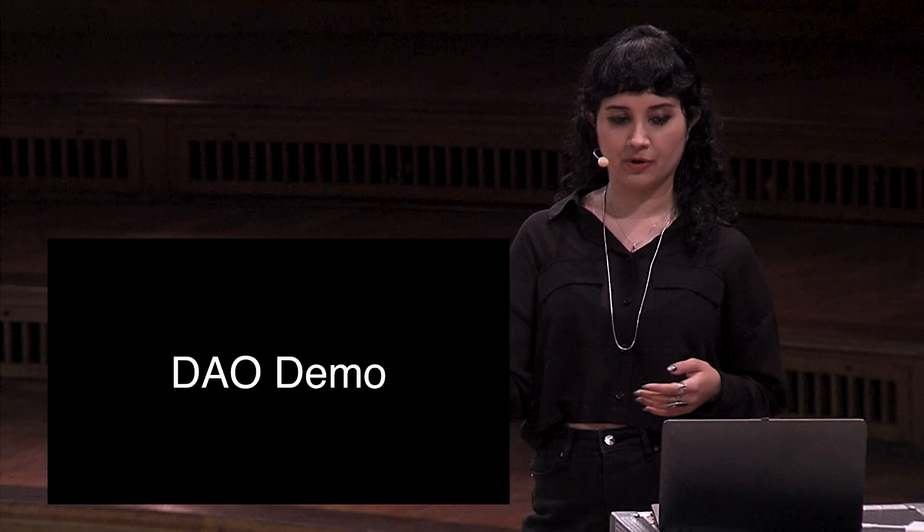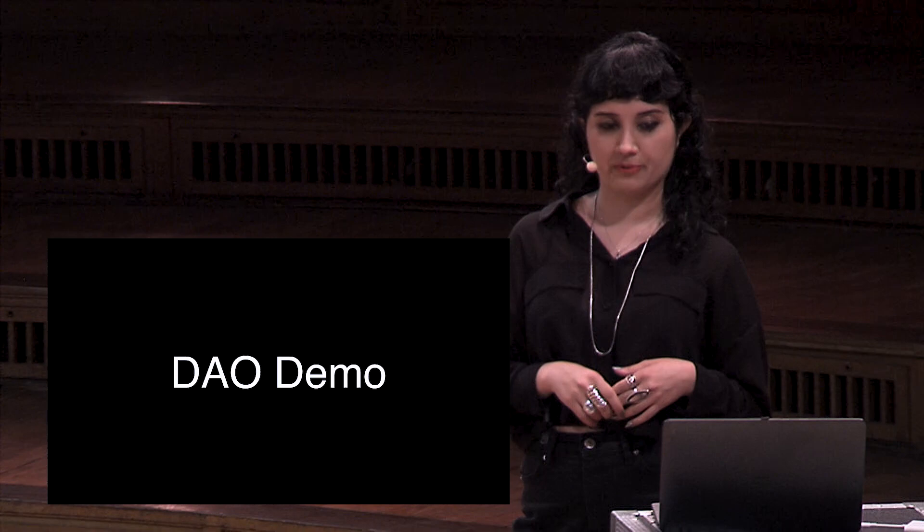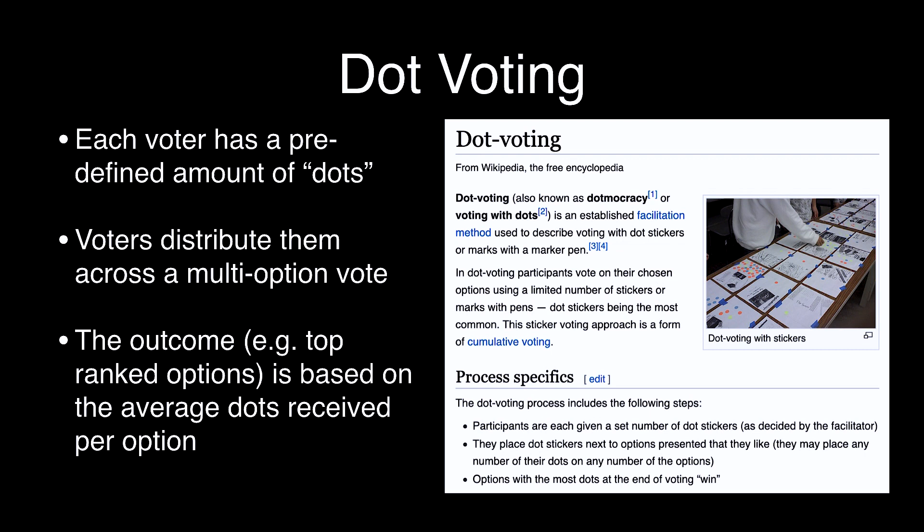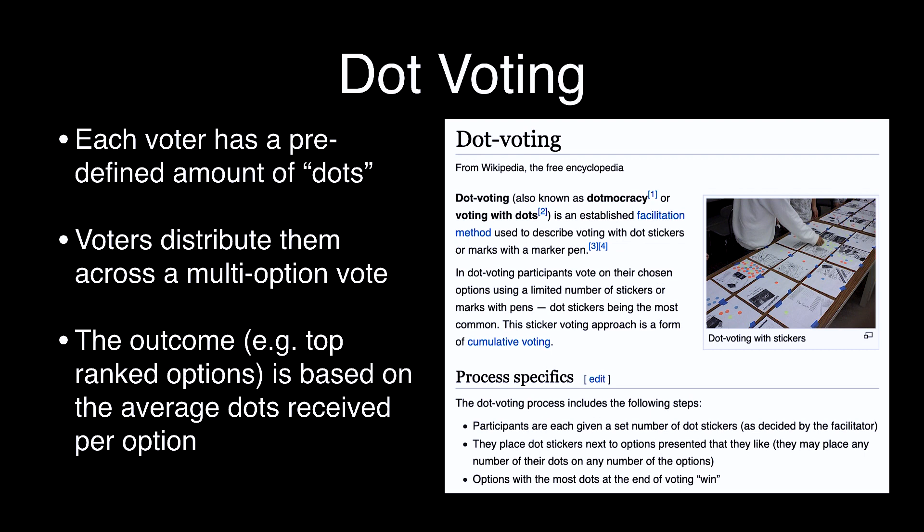The mechanism is very simple. Each voter has a predefined amount of dots and you distribute those amongst multiple options. The outcome is based on the average number of dots or points received per option. That Wikipedia entry is there to show it's a very generic mechanism. So what are the different use cases for this?